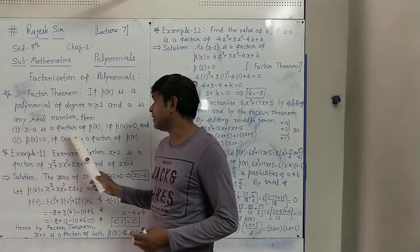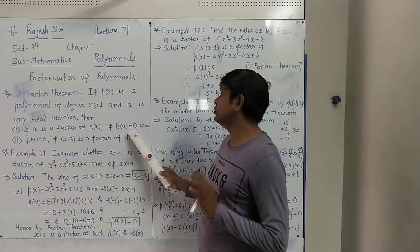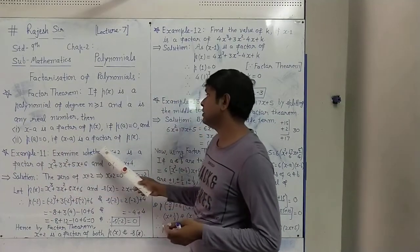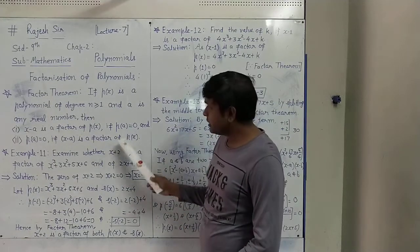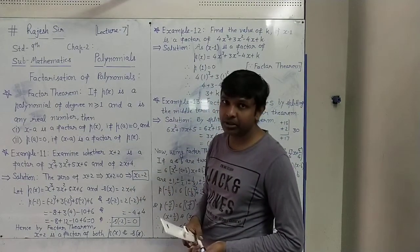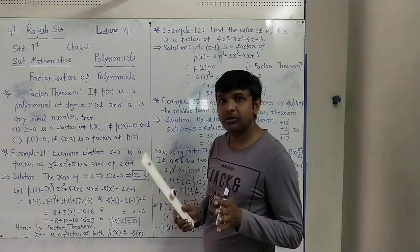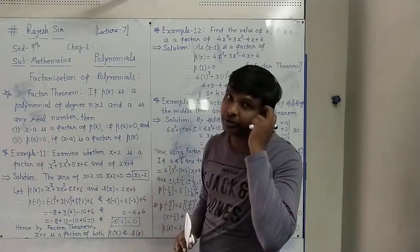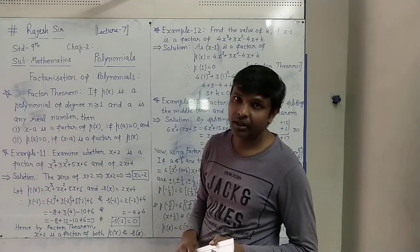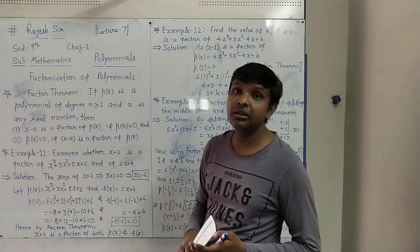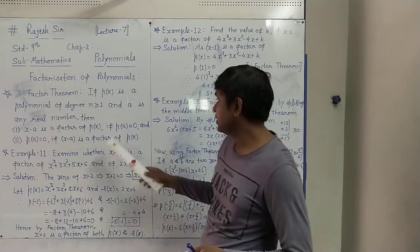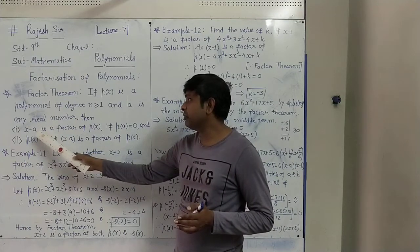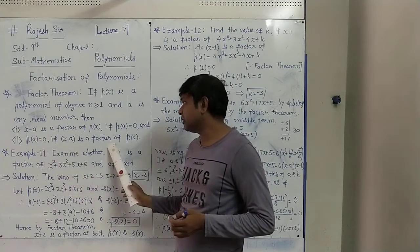First: x minus a is a factor of P(x) if P(a) equals 0. And second: if x minus a is a factor of P(x), then P(a) equals 0. We have seen this in earlier examples also — how to check that the given expression is a factor of a polynomial or not. We were trying to get the remainder, and if the remainder R equals P(a) is 0, then x minus a is a factor.